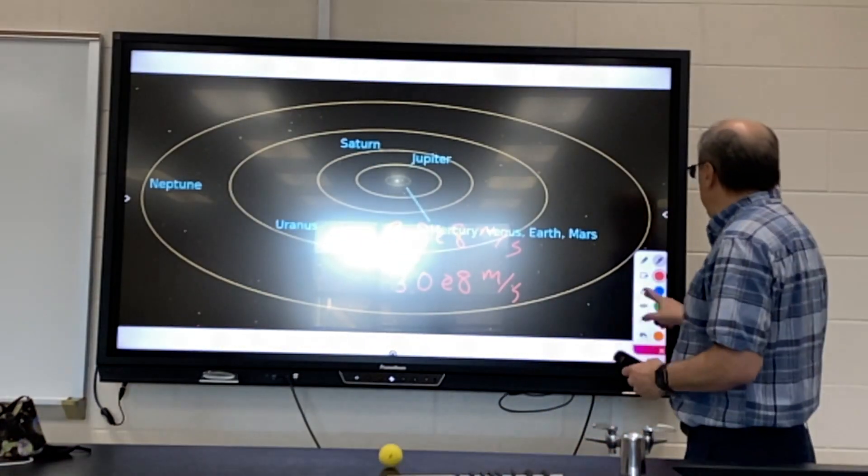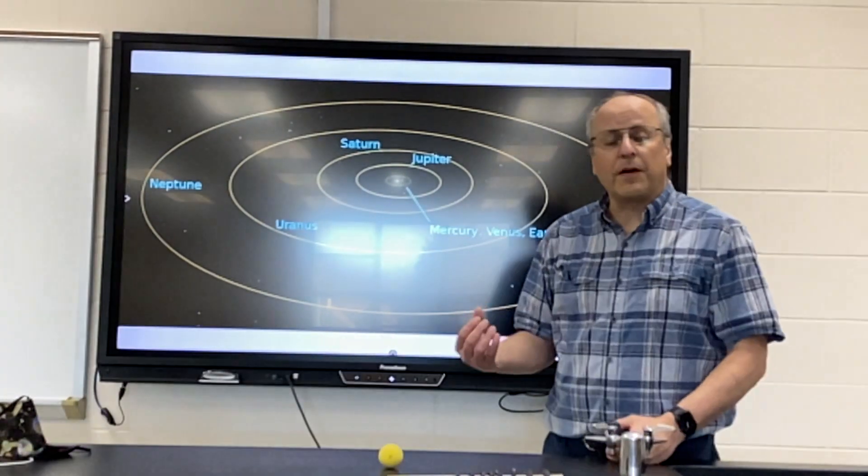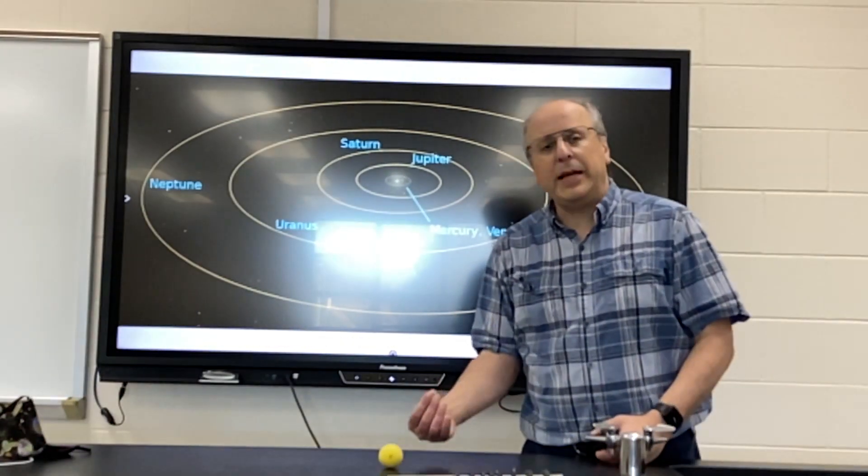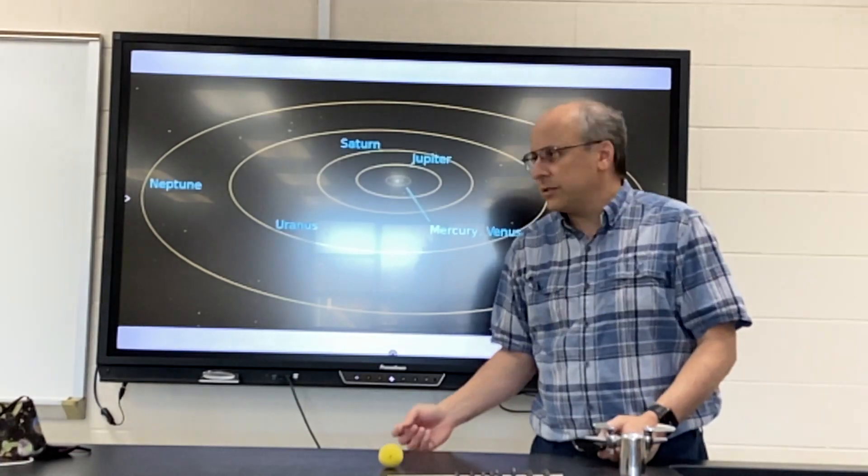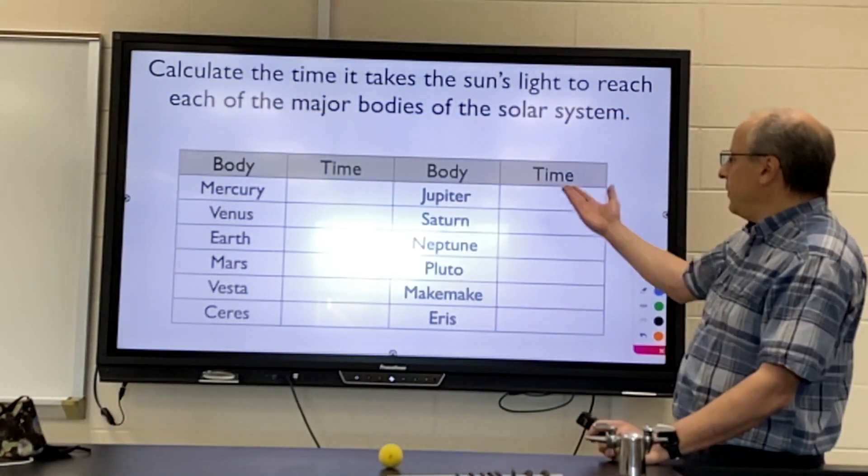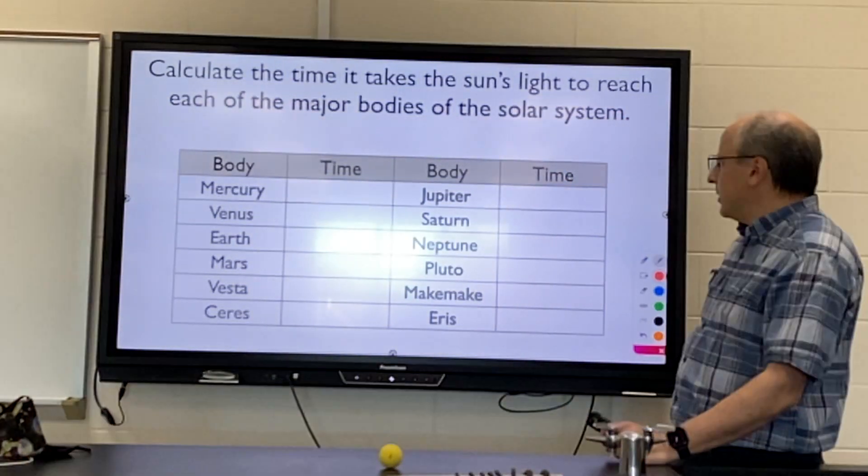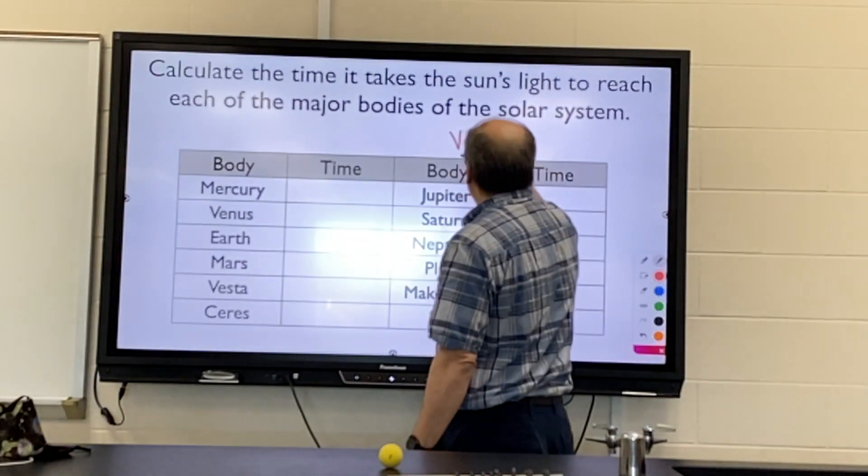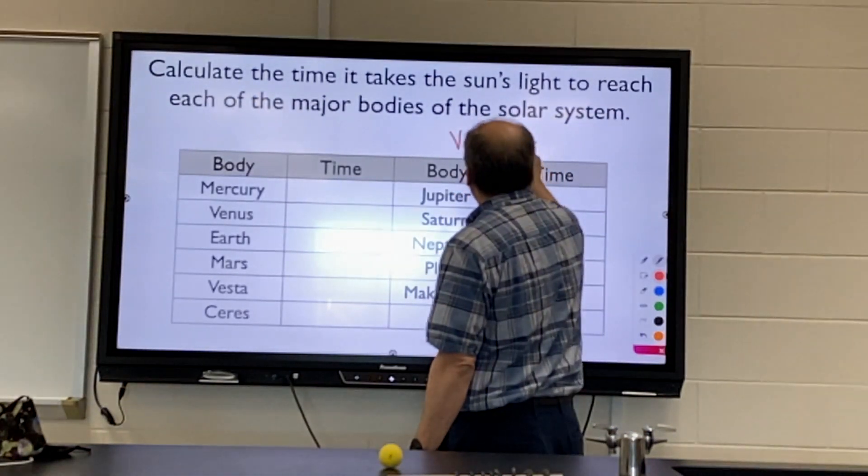Okay, so I'd like you to figure out how long it's going to take light to travel from the Sun to each of the major bodies in our solar system. If you want, you can make a chart. It looks similar to this. You're going to go back to the formula velocity equals distance over time.